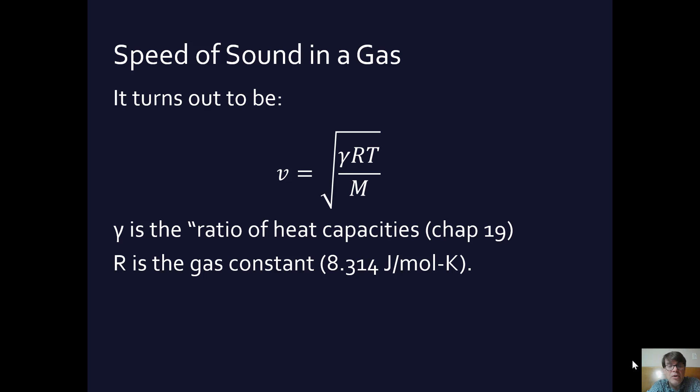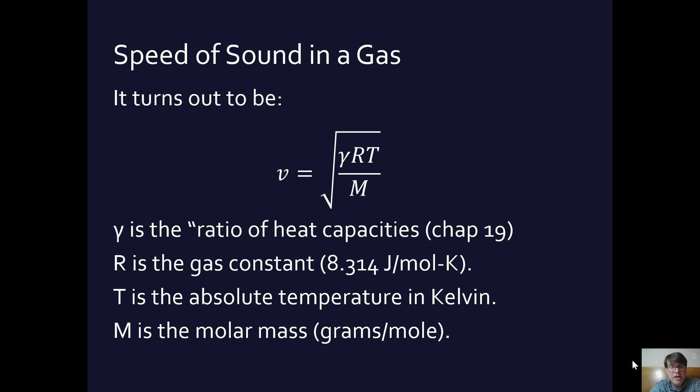R is the gas constant you may know from chemistry, 8.314 joules per mole Kelvin. T stands for the absolute temperature in Kelvin, which basically means you add 273 to whatever the Celsius is. And lastly, M is the molar mass, the number of grams per mole for whatever gas you're talking about.